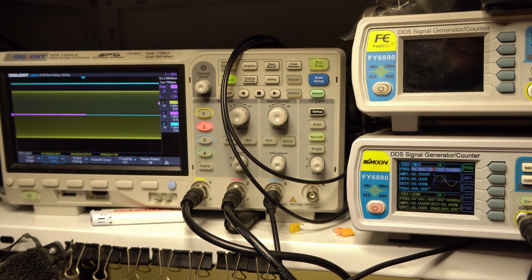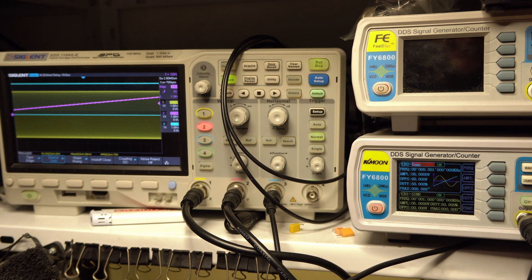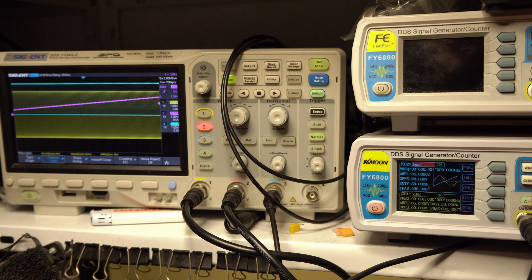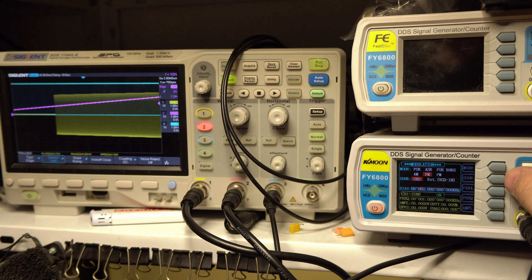We go back to channel two, set it to waveform ramp for a linear sweep, or set it to exponential rise for a logarithmic sweep. So let's go back to ramp. Then we go into modulate, so the modulation mode to FM, and select source channel two.